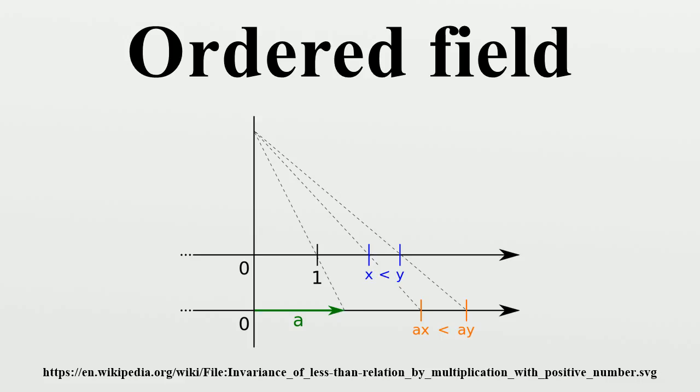An ordered field is a field F together with a positive cone P. The pre-orderings on F are precisely the intersections of families of positive cones on F. The positive cones are the maximal pre-orderings.